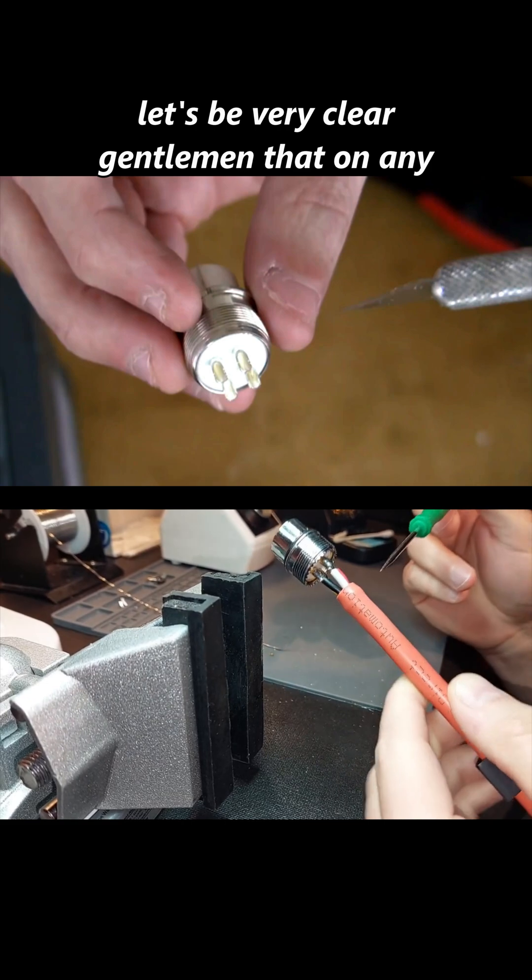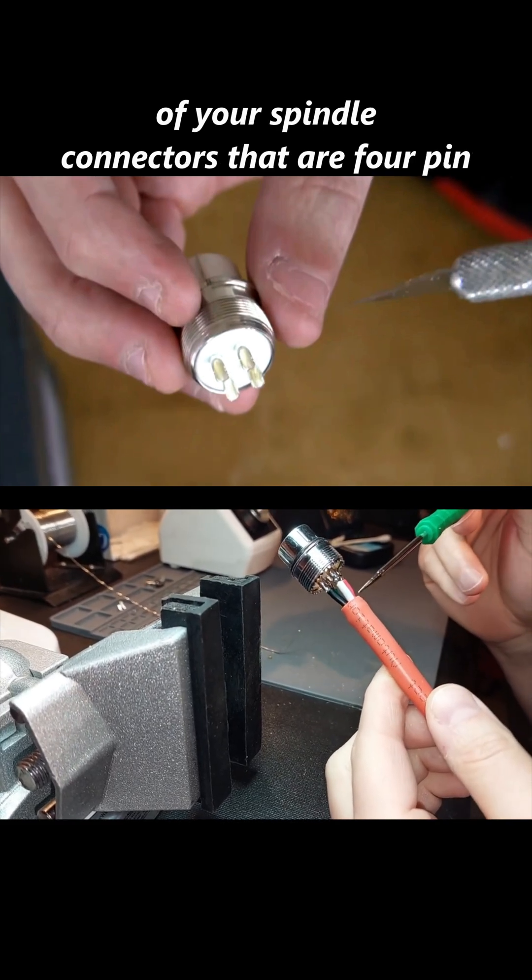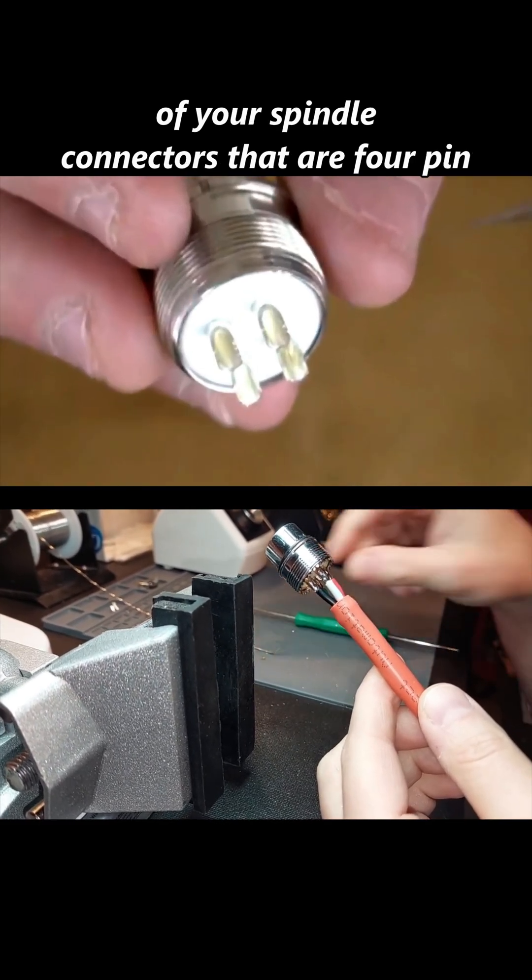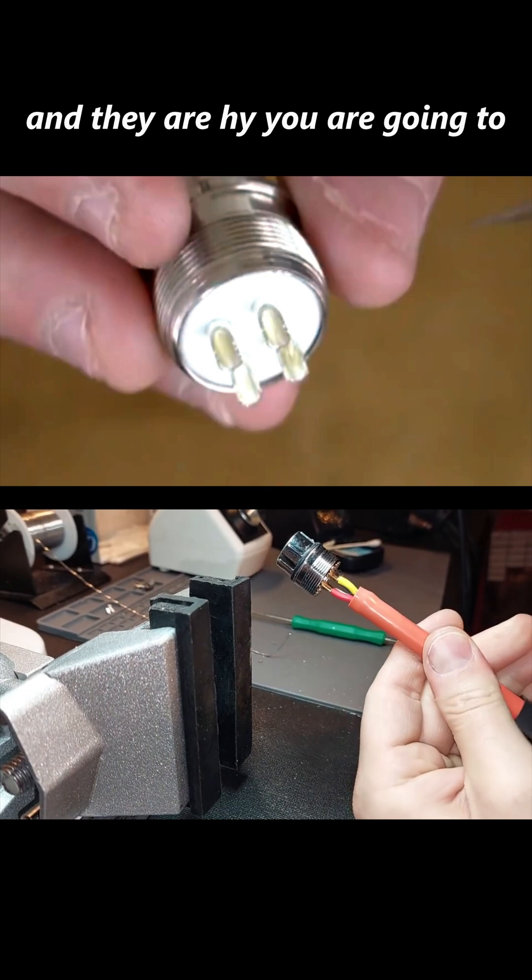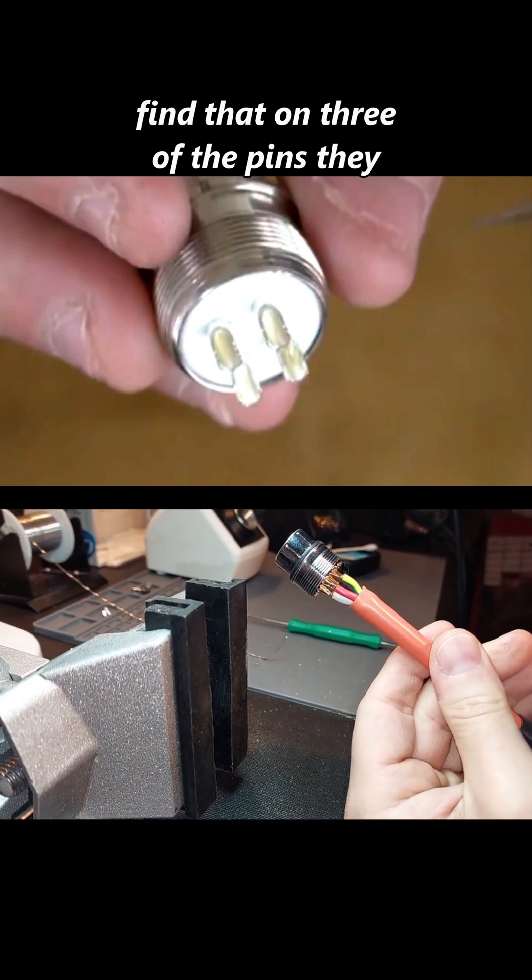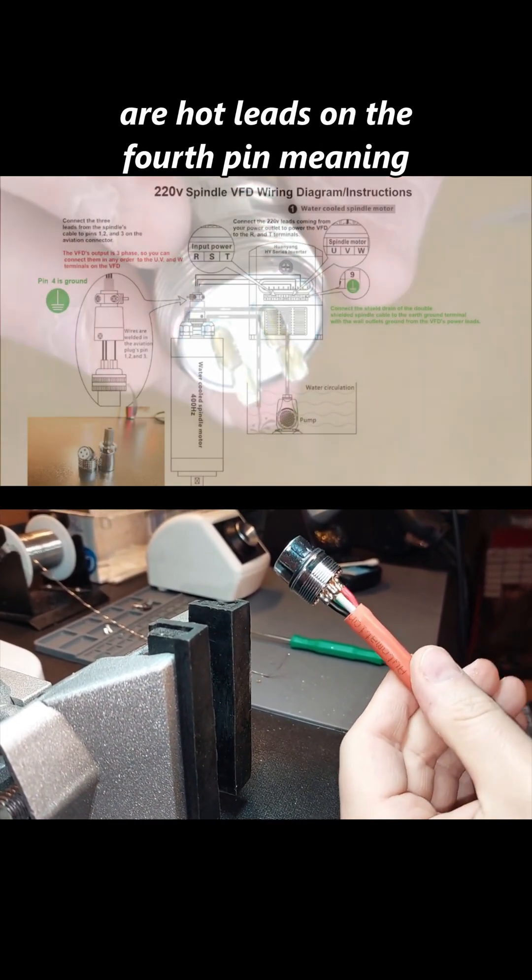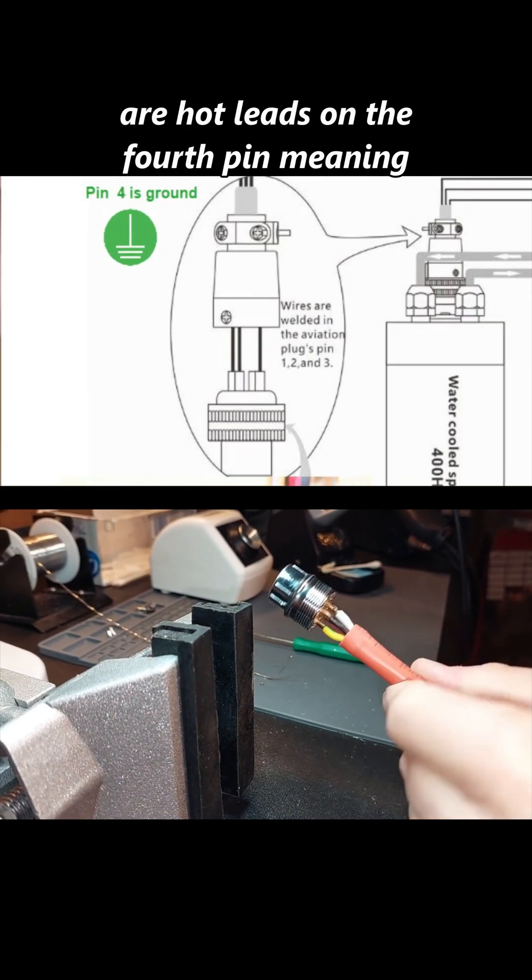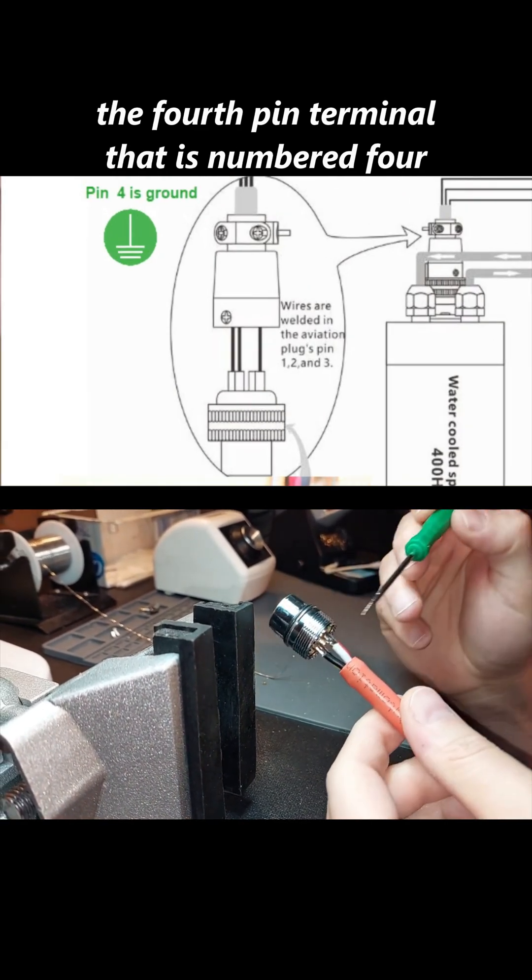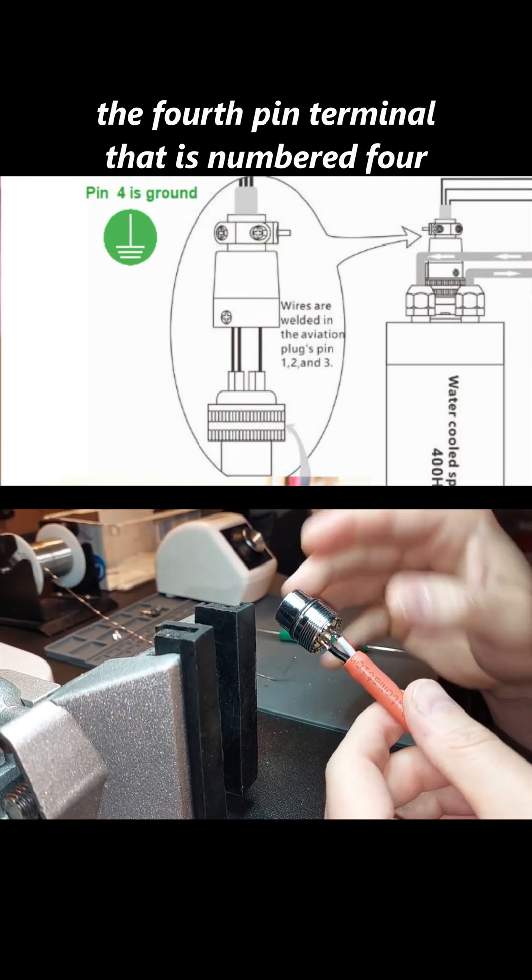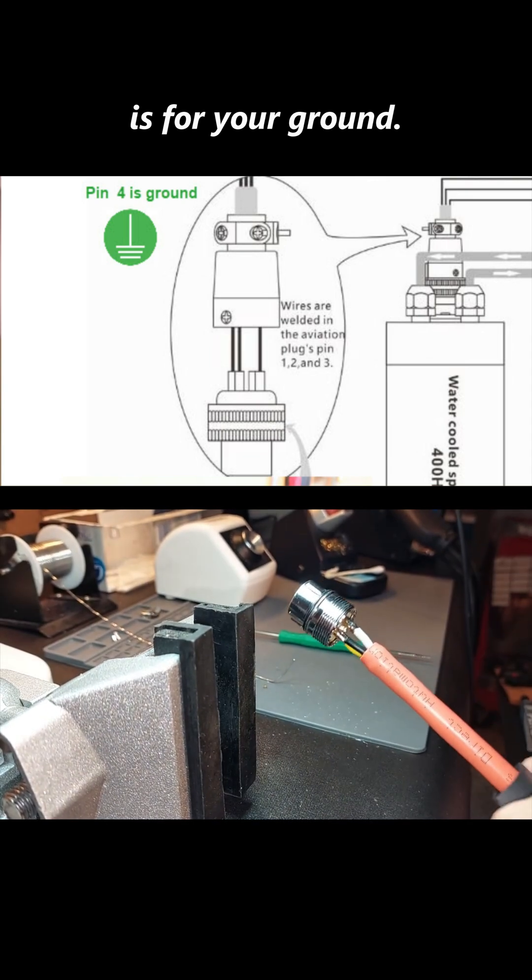Let's be very clear, gentlemen, that on any of your spindle connectors that are four pin and they are H-Y, you are going to find that on three of the pins they are hot leads. On the fourth pin, meaning the fourth pin terminal that is numbered four, is for your ground.